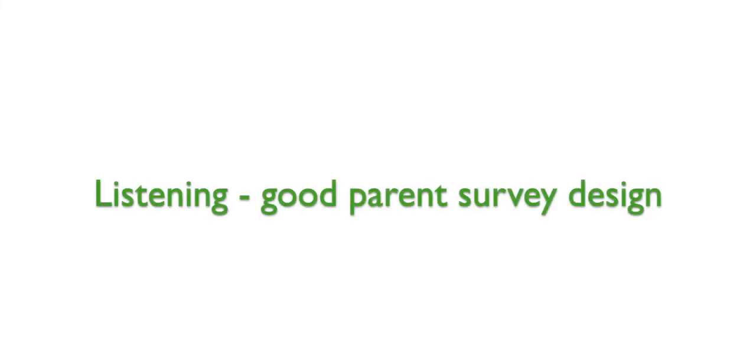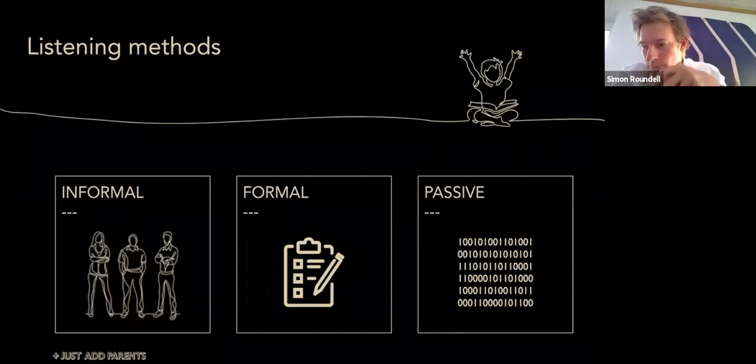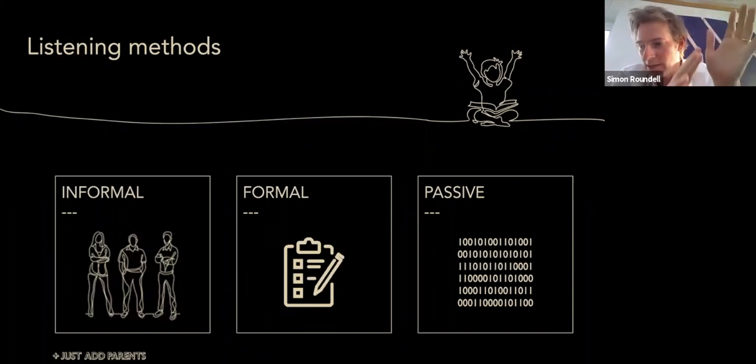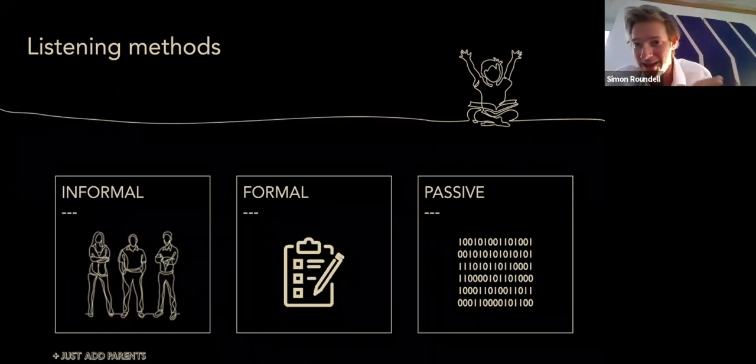We want to think about three different kinds of listening. The first one is informal. This is just having a chat at school gates or the classroom door or any other sort of informal interaction with parents. Usually this information is ad hoc and never codified.